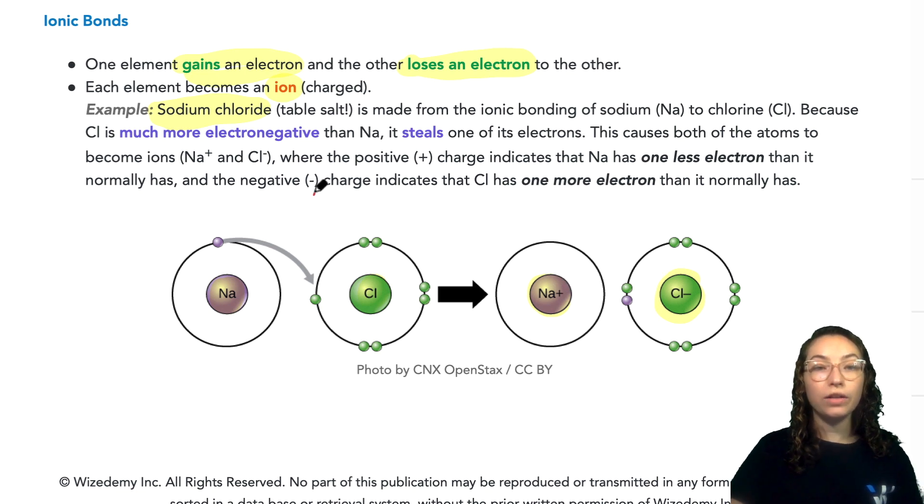Since electrons are normally negatively charged, the gain of an electron by chlorine will make it become negatively charged. And because sodium lost one, it'll become positively charged.